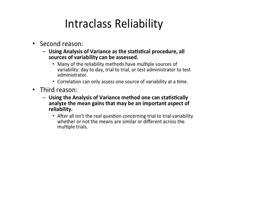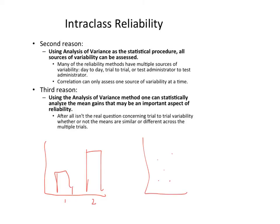The third reason is that ANOVA allows you to look at statistically significant mean gains, which correlation cannot do. If a test shows mean gains, that suggests it wasn't consistent. For instance, if there was a significant increase from day 1 to day 2, that would suggest an unreliable test. However, in correlation, when you're just looking at a scattering of dots, it does not tell you if there are differences between day 1 and day 2 in terms of mean gains — and that's a pretty important aspect.